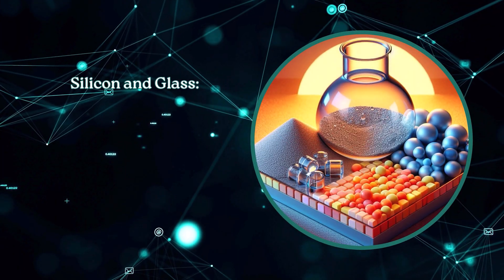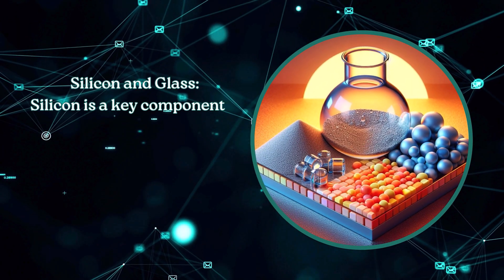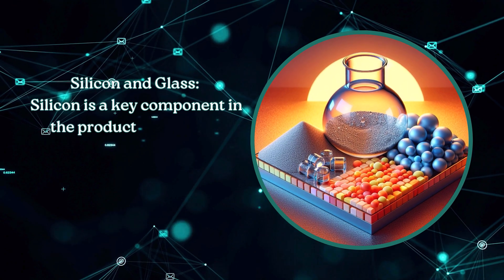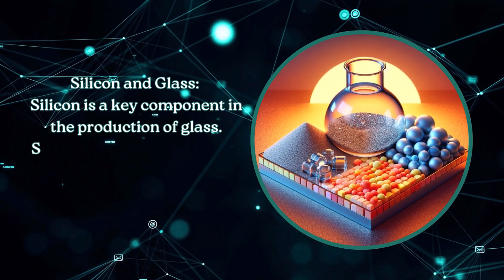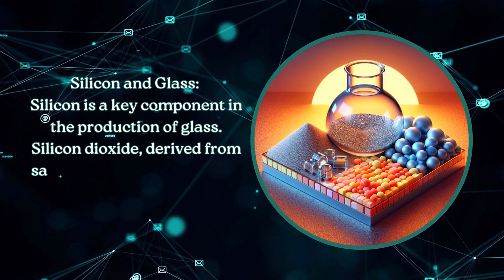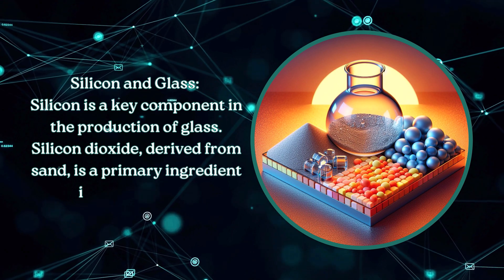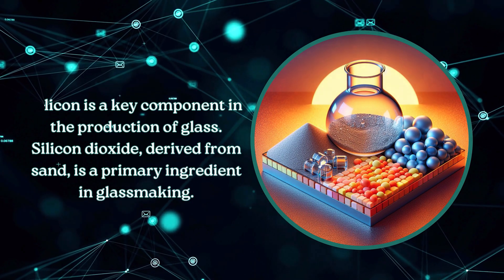Silicon is a key component in the production of glass. Silicon dioxide, derived from sand, is a primary ingredient in glass making.